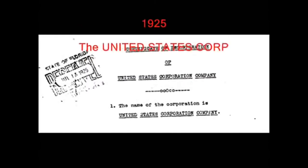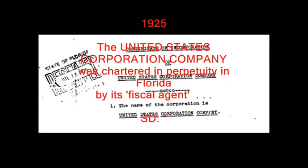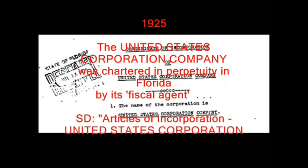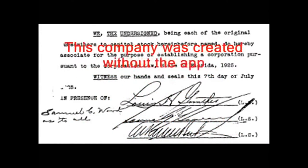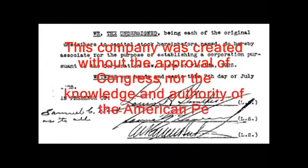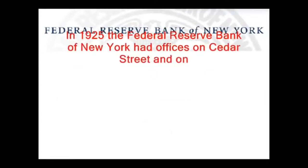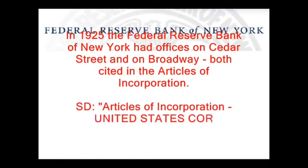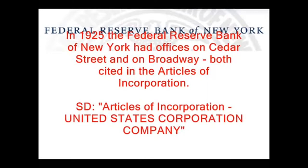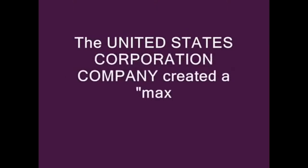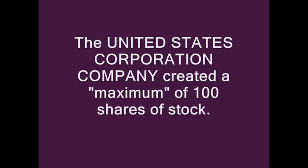1925: The United States Corporation Company was chartered in perpetuity in Florida by its fiscal agent. Source document: Articles of Incorporation, United States Corporation Company. This company was created without the approval of Congress nor the knowledge and authority of the American people. Note: in 1925, the Federal Reserve Bank of New York had offices on Cedar Street and on Broadway, both cited in the Articles of Incorporation. The United States Corporation Company created a maximum of 100 shares of stock. The Articles of Incorporation revealed the names of three individuals who held only five shares. The other shareholders were not identified.